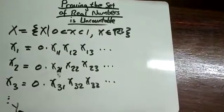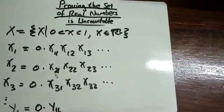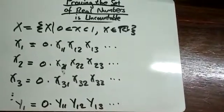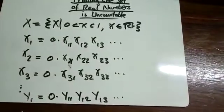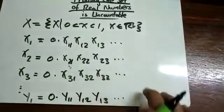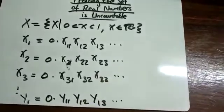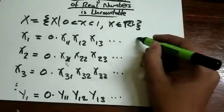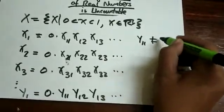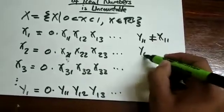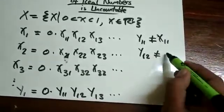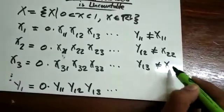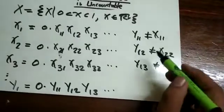So let's consider a new real number, y1, with digits y11, y12, and y13. So we can make sure that y is a completely different number by changing one digit in each of these numbers. And if you change digits, even just one, you create an entirely new number. So let's make sure y11 is not equal to x11, and y12 is not equal to x22, and y13 is not equal to x23.